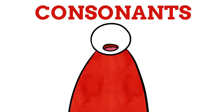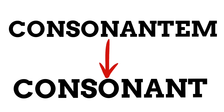Consonants are defined by the fact that to make their sound, you have to close your mouth. Take the sound the letter B makes — B — you have to actively close your mouth to make that sound, hence why B is a consonant. The etymology of the word consonant is that it comes from the Latin consonatum, which means something along the lines of to sound together. This is because initially it was believed that consonant sounds could only be produced when attached to a vowel.